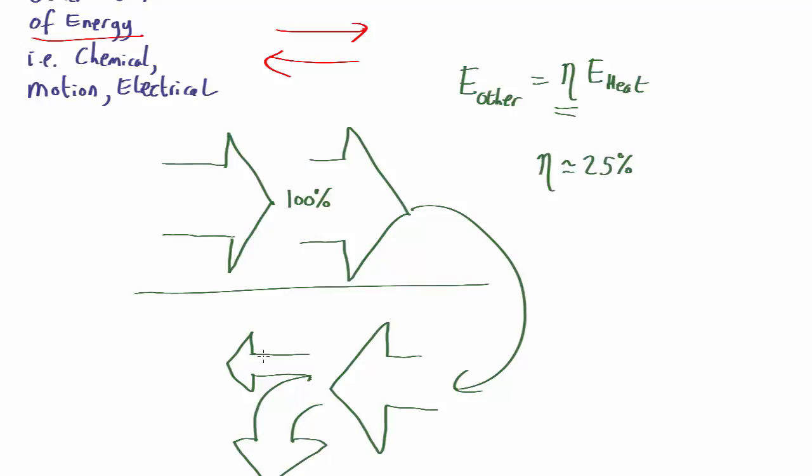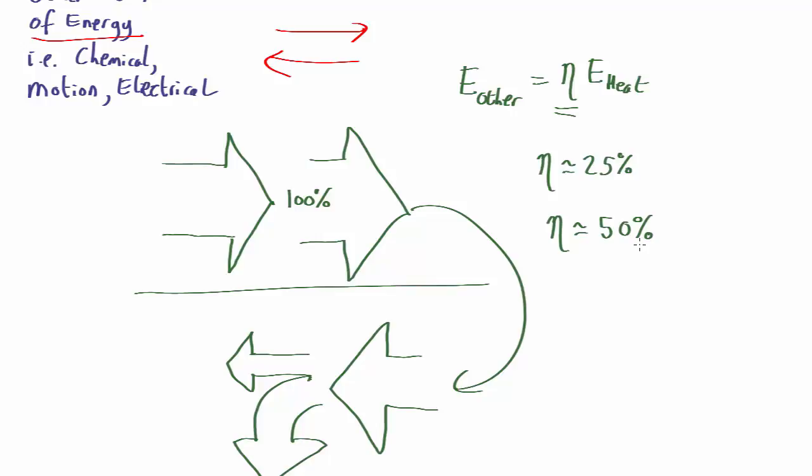For a big power station, it's more like 50%. Power stations, a good one, can be around 50% maybe. Usually a bit worse than that, but occasionally slightly better. And so about half the energy is wasted, turning into heat. That's why power stations need things like cooling towers to dissipate the other 50% of the energy that's going out in the form of heat.